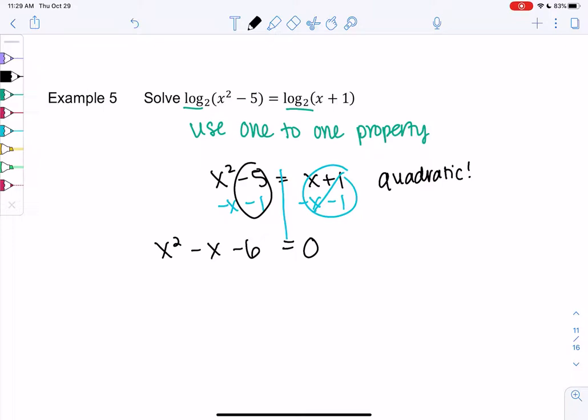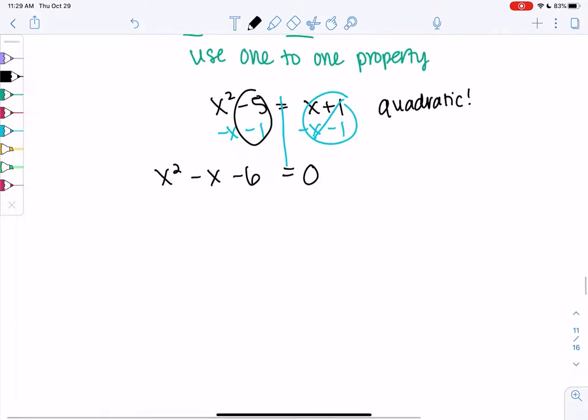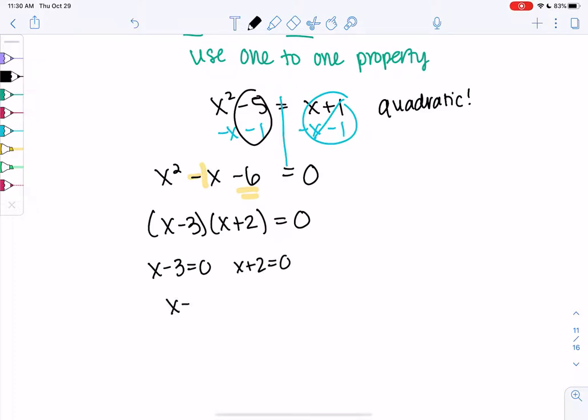x squared minus x minus 6 equals 0. So quadratic equation works. I'm going to factor because it's more efficient. When I factor, I get x minus 3 and x plus 2 equals 0. Minus 3 plus 2 adds up to negative 1 and multiplies to negative 6. So that tells me x minus 3 equals 0 or x plus 2 equals 0. So x equals 3 or x equals negative 2.